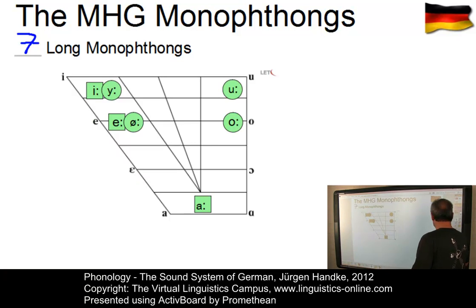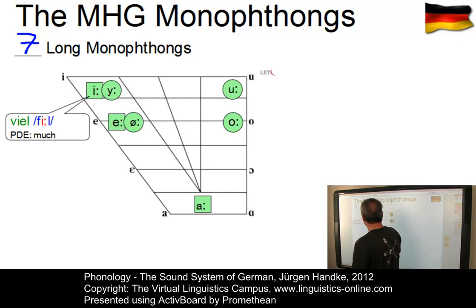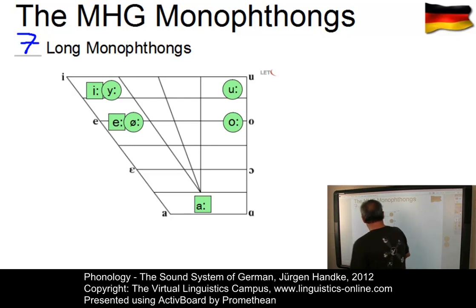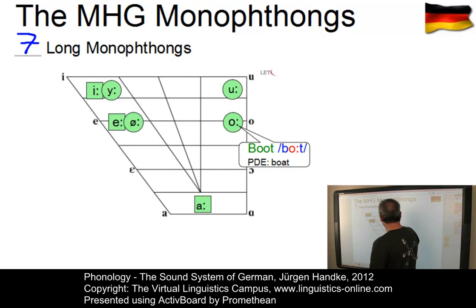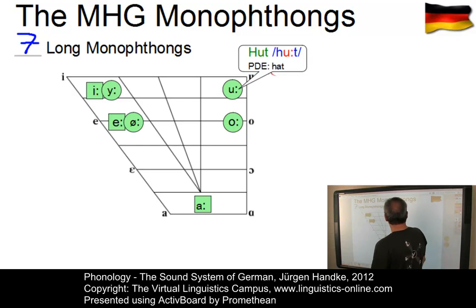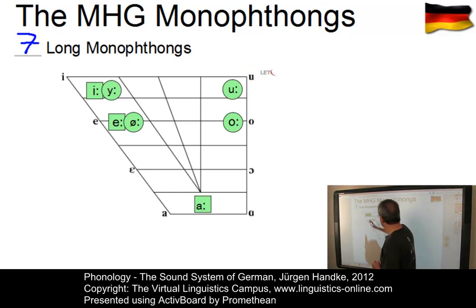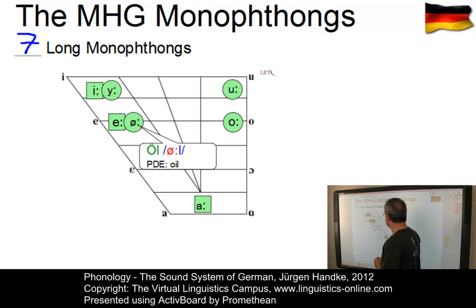Let us illustrate the German sound system on the basis of the merger of the two front vowels, so on the basis of 7 long monophthongs. Here is one example per phoneme. We have an ē as in Viel, an e as in Beet, a low central vowel a as in Saat, a mid-high back vowel o as in Boot, a high back vowel u as in Hut, and then two rounded front vowels: ü as in rüber and ö as in Öl.